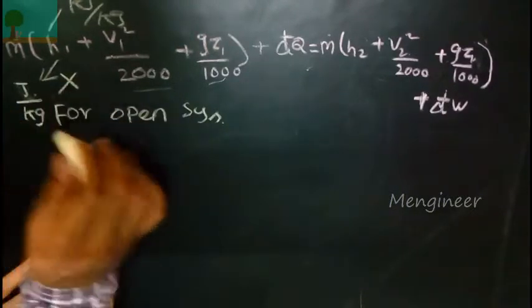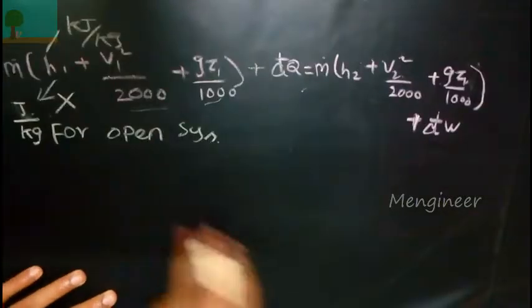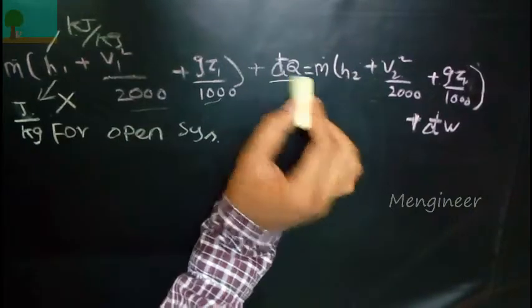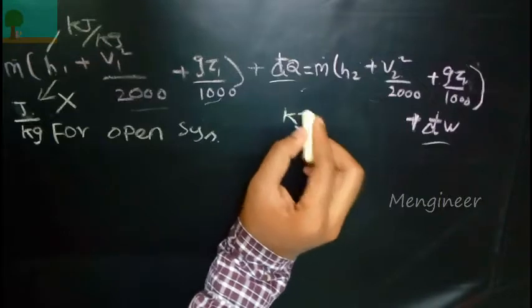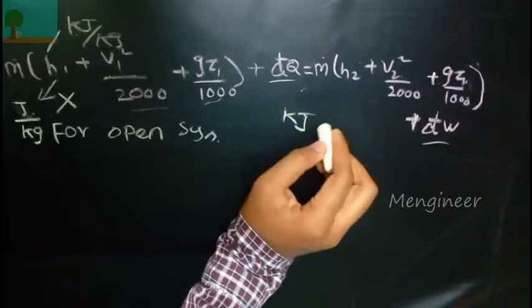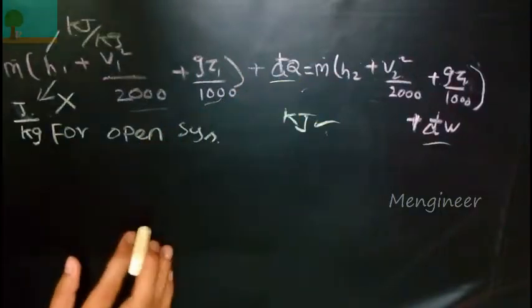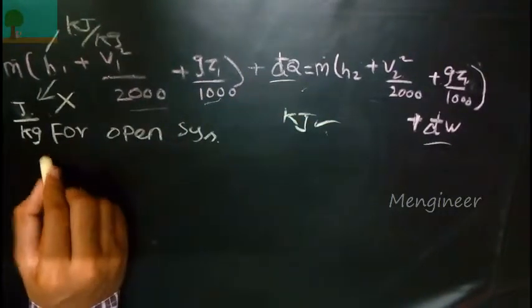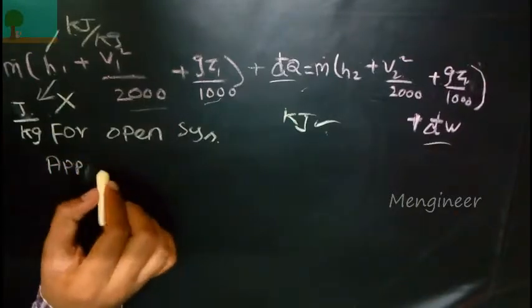We have to put the enthalpy value in kilojoule per kg only, and we should not put it in joule per kg, so that you will be getting the answers for heat and work in kilojoule. It will be the correct format. Just remember as it is.